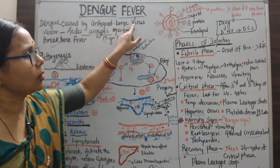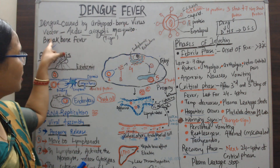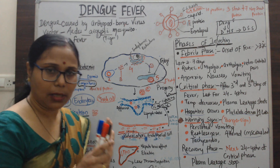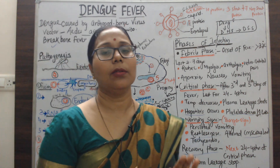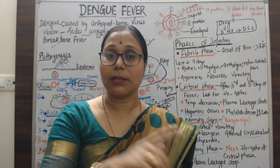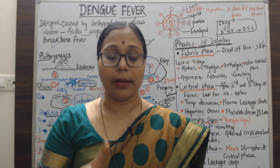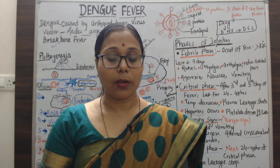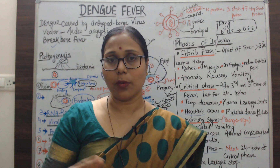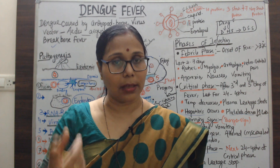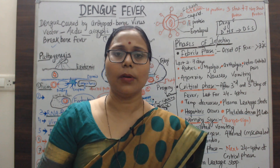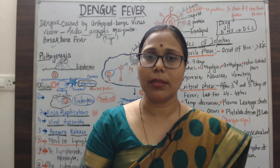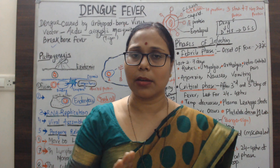The vector is the Aedes aegypti mosquito. Dengue fever is carried by this mosquito as a vector, so it is called an arthropod-borne disease. There are four serotypes found: serotype one, serotype two, serotype three, and serotype four.